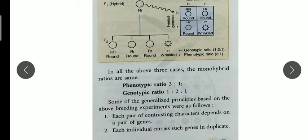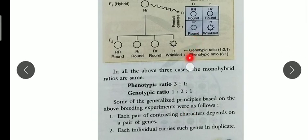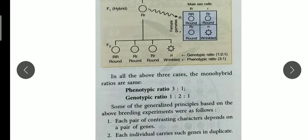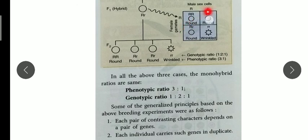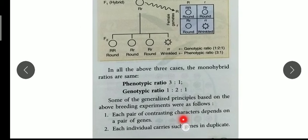Exceptions exist which you will learn in higher classes, but for tenth class just remember this. Now, what is the principle this is based on? First: each pair of contrasting characters depends on a pair of genes. Here, we pick one character, cross it with the other, and write in the two columns. Then we take the second character, cross with the other two, and write it down. So we always have a pair of genes, and the characters — both genotypic and phenotypic — are based on purely contrasting pairs.